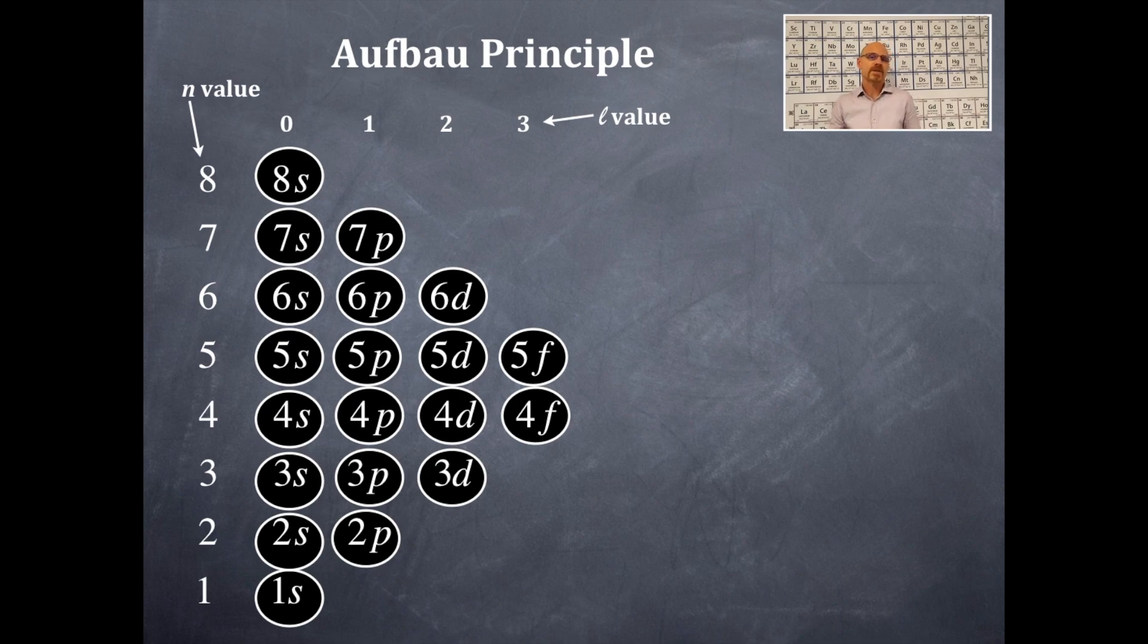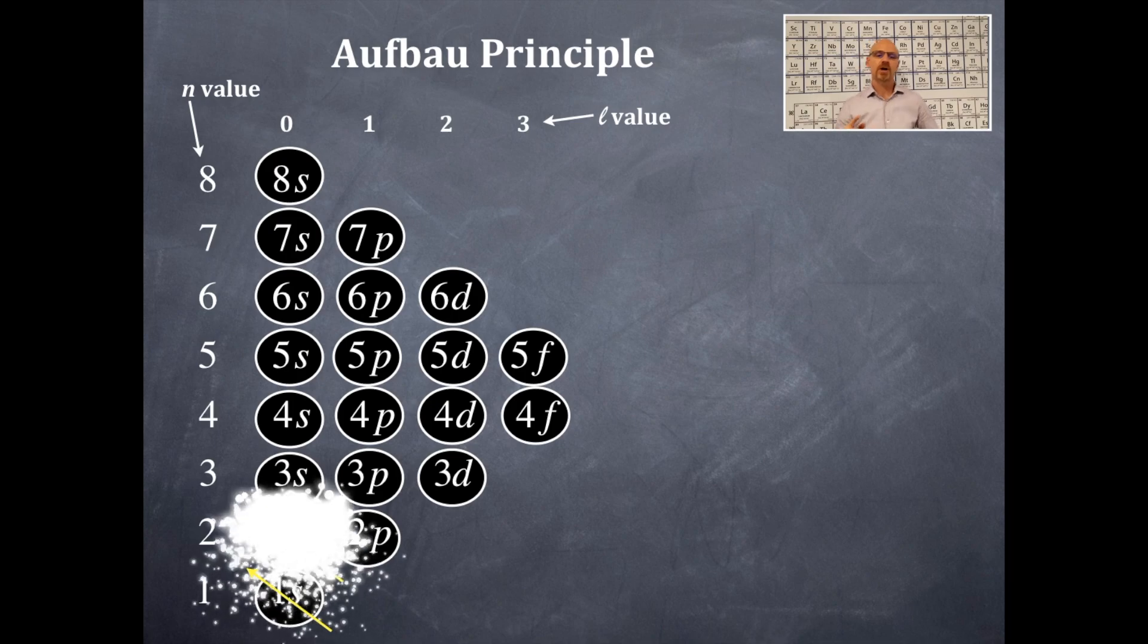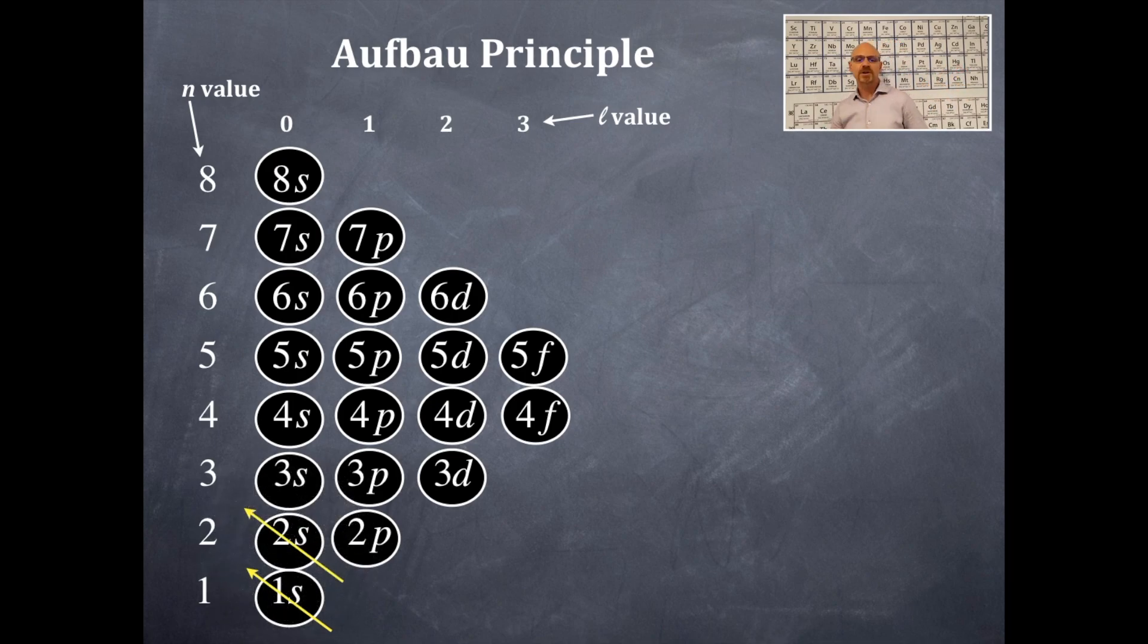You're going to follow these arrows from the base of the arrow to the tip of the arrow. So you're first going to fill in the 1s orbital. Then after that, you're going to go to the 2s orbital. After the 2s orbital, it's going to be the 2p, then the 3s. Then after the 3s, it's going to be the 3p and the 4s.